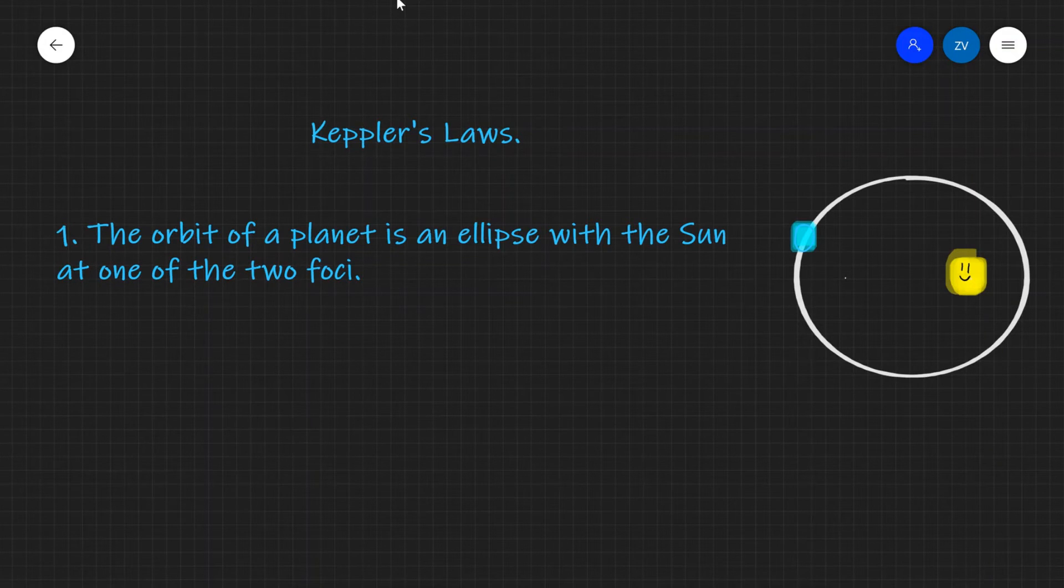Let's have a look at the laws that Johannes Kepler managed to derive by looking at the data of the planetary motion. The first of his laws is that the orbit of a planet is an ellipse with the sun at one of the two foci.